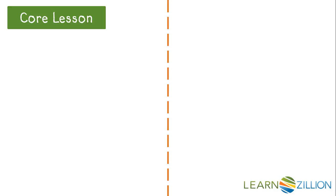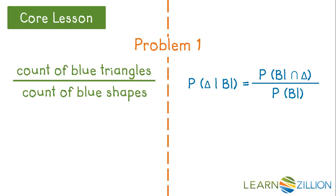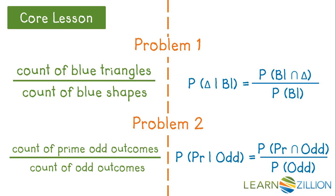Let's take a moment and compare the proportions used to solve the last two examples with the conditional probability formula. In problem one, we used the fraction count of blue triangles over the count of blue shapes. Writing this using the conditional probability formula, the intersection of blue and triangles is the same count value as our fraction's count of blue triangles, and the same relationship holds for the denominator — count of blue shapes. This also holds true for our second problem. In essence, the conditional probability of A given B is just the fraction of B's outcomes that also belong to A. So in problem two, how many of those odd outcomes were also prime? And in problem one, how many of those blue shapes were also triangles?